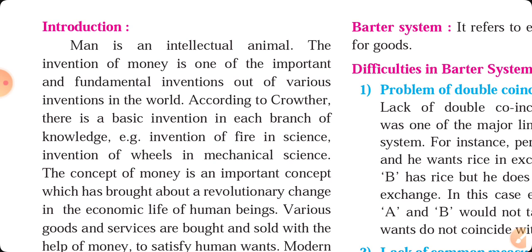Among all the inventions in the world, the greatest invention that humans have made is that of money, we can say that. Because there is a reason for that — when there was no money, the barter system existed, and in the barter system there were many problems. When problems come, this is why new things are made. Just like when you were young there were yellow-colored bulbs, then CFL, now LED bulbs — invention happens because there were some shortcomings in the old versions.